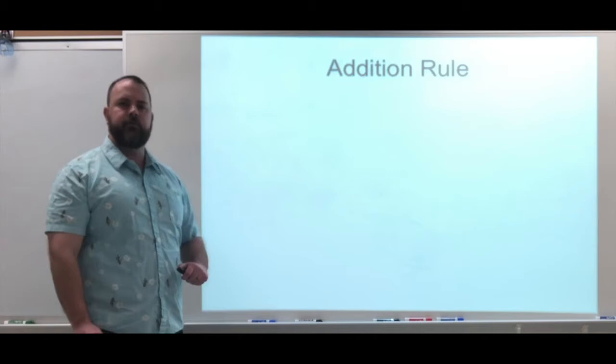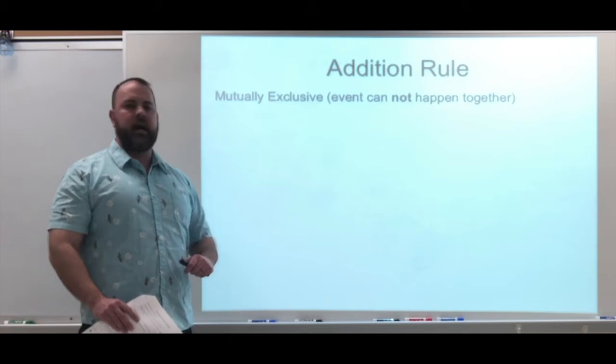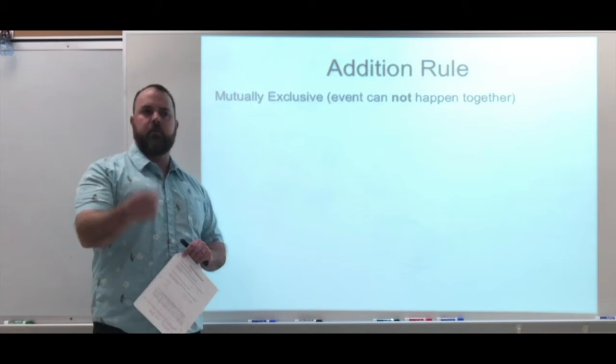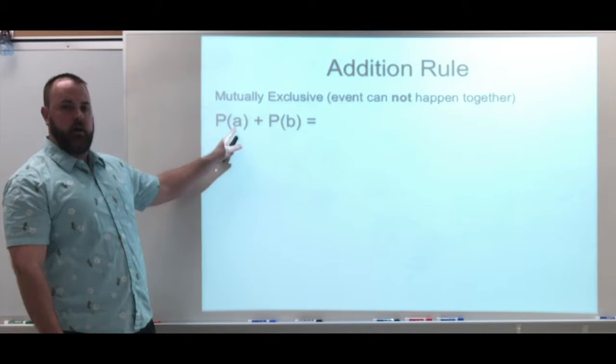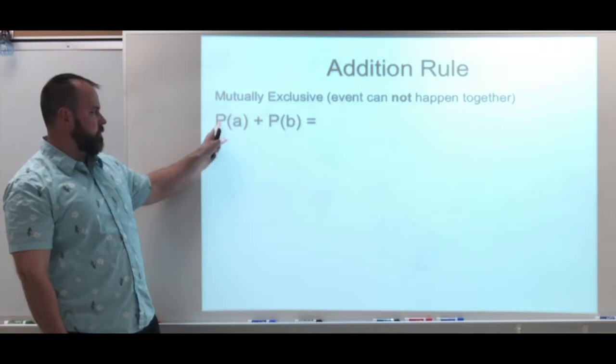For the addition rule, we need to consider mutually exclusive events — events that cannot happen together. When you see the keyword 'or,' identify your two events and ask: can those two events happen at the same time? If they're mutually exclusive, they can't. You just take the probability of event A plus the probability of event B and add them together. P is the notation for probability.